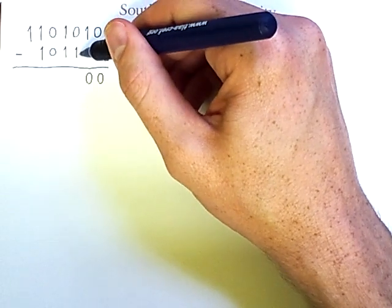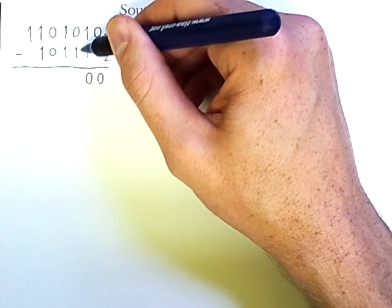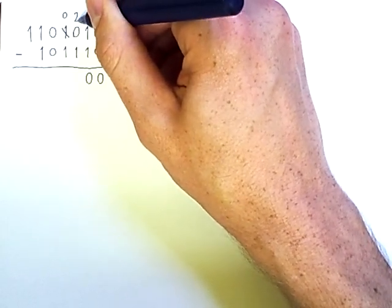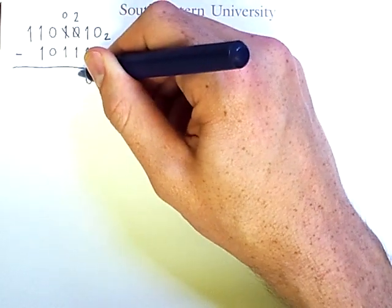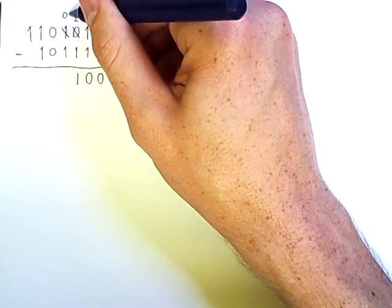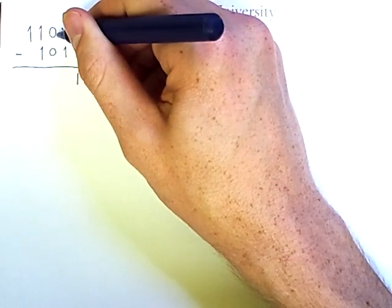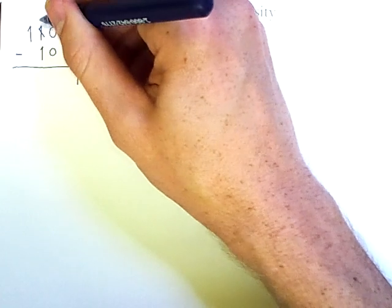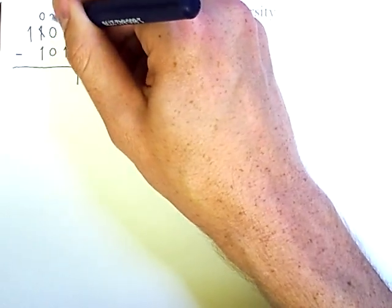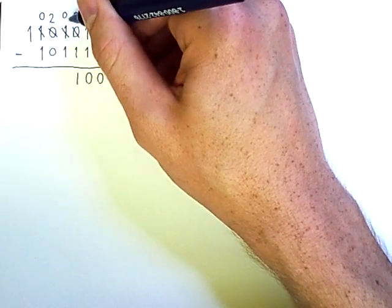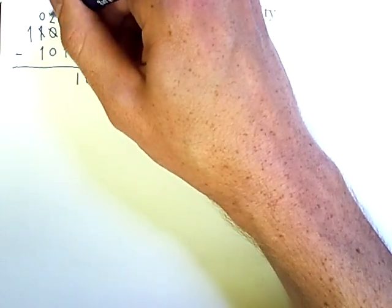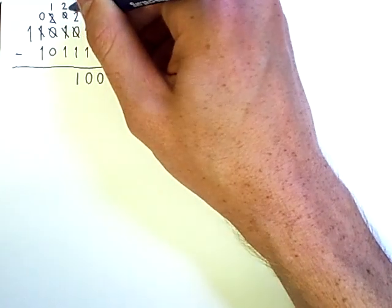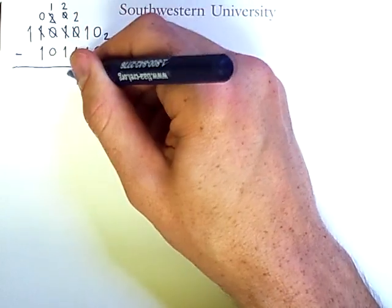Now 0 minus 1 requires us to borrow a digit from the adjacent column. Therefore, this column has a 0 in it so that this can be 2, and 2 minus 1 is 1. Now we're left with a 0 here and need to borrow yet again, except the adjacent column does not have a 1 for us to borrow. So we have to borrow 1 column over yet again. This 1 is replaced with a 0, putting a 2 here. Now this column only needs to borrow a 1 to perform its subtraction, so this will become a 1 and this 0 will become a 2. And we can subtract 1 from 2 to get 1.